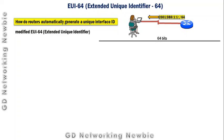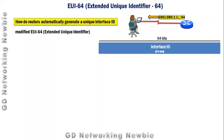The interface ID is 64 bits, so the goal is to get 64 bits of interface ID. For illustration: using the SLAAC method, a client machine has received the prefix part and prefix length — that is, 64 bits from the router — but now it needs the further 64 bits, and we are in search of those 64 bits.